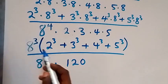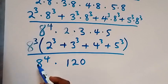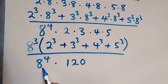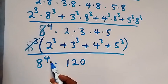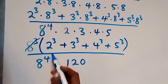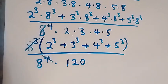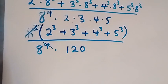From the law of indices, we can simplify 8 raised to power 3 and 8 raised to power 4. These cancel, leaving 8 raised to power 3 cancelled out 3 of the 4, so we are left with 1 eight in the denominator.